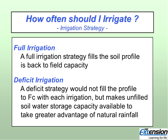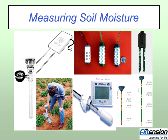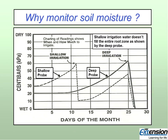The full irrigation strategy refills the soil profile back to field capacity, whereas a deficit strategy keeps moisture a bit below field capacity to take advantage of natural rainfall events — leaving about 30% of the tank available to accommodate rain. The ability to use this strategy depends on how much soil water storage you have, which is a function of root zone depth and soil texture.